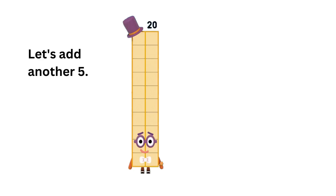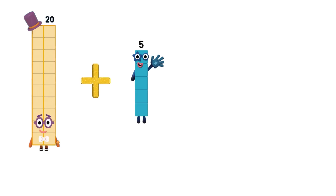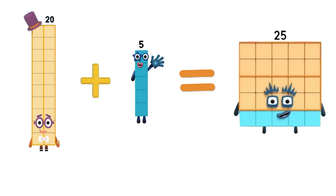Let's add another five. 20 plus five equals 25.